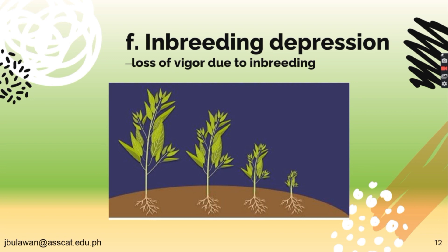Inbreeding depression — from the word depression, it means the plants have gone into stress, causing them to become stunted and not grow well. It is the loss of vigor due to inbreeding. With the use of the same plant material through inbreeding, the resulting fruits or plant itself will become smaller and less able to achieve the wanted desirable traits.